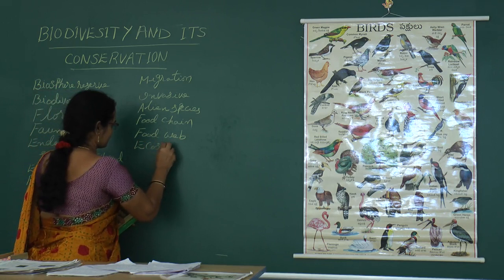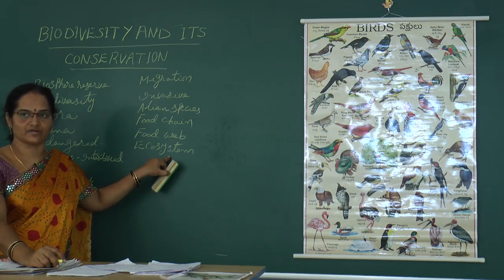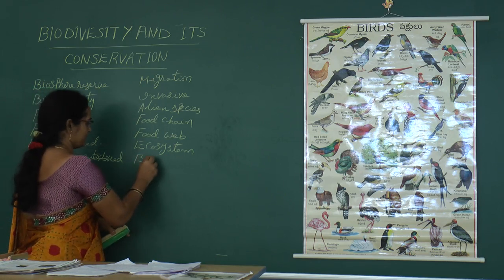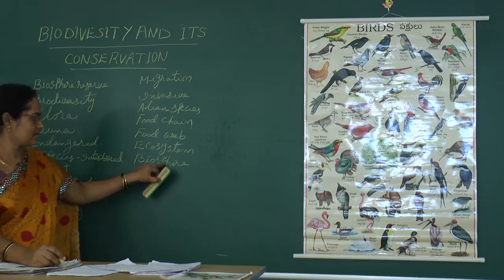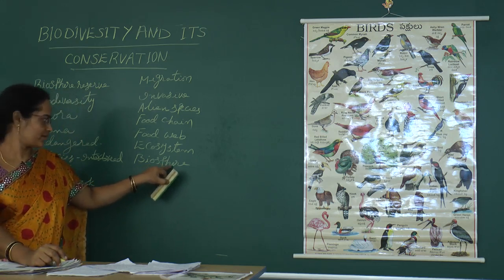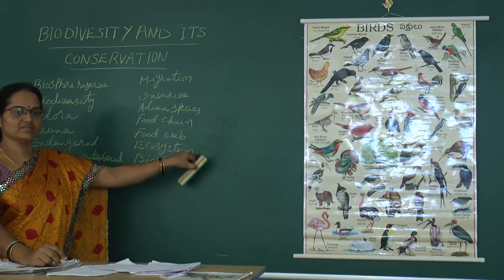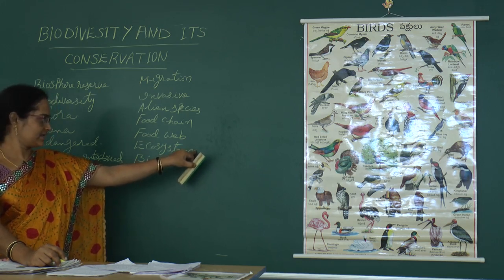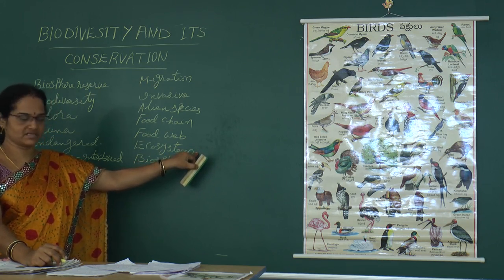Next: ecosystem. Ecosystem is the unit of biosphere. The life-supporting zone on the earth is known as biosphere, and the unit of biosphere is the ecosystem. Ecosystem is made up of different types of flora and fauna, and contains various types of habitats like terrestrial ecosystem, aquatic ecosystem, arboreal ecosystem, and so on.